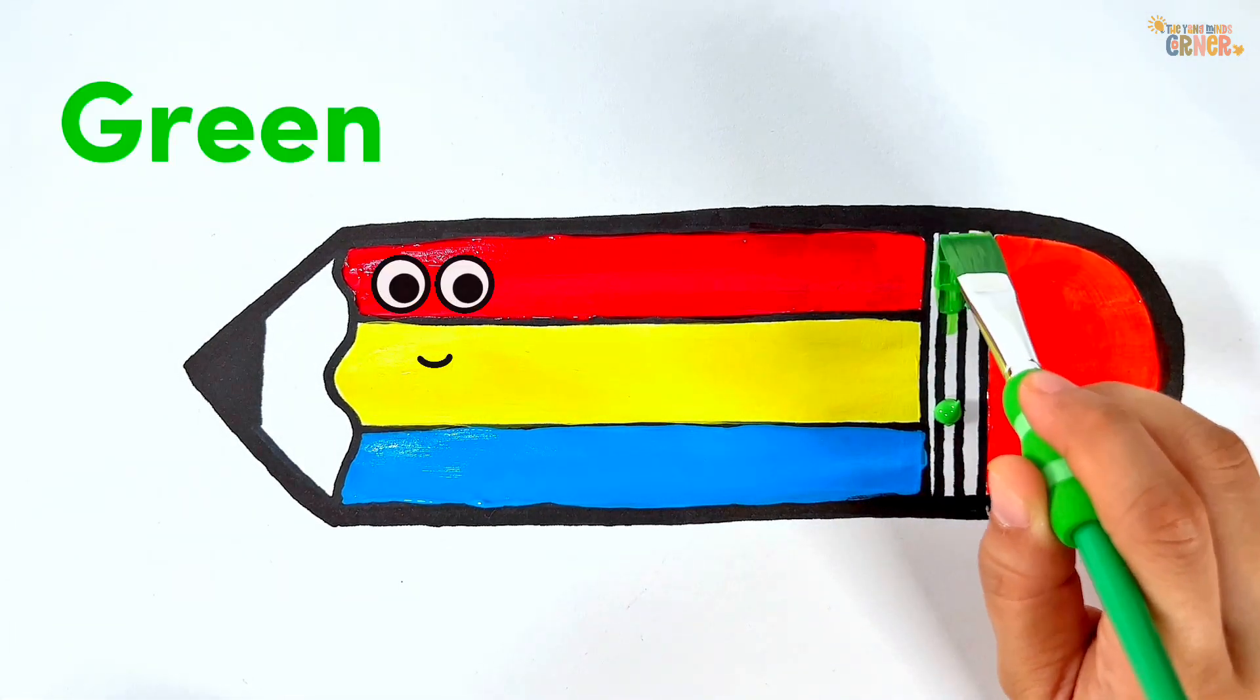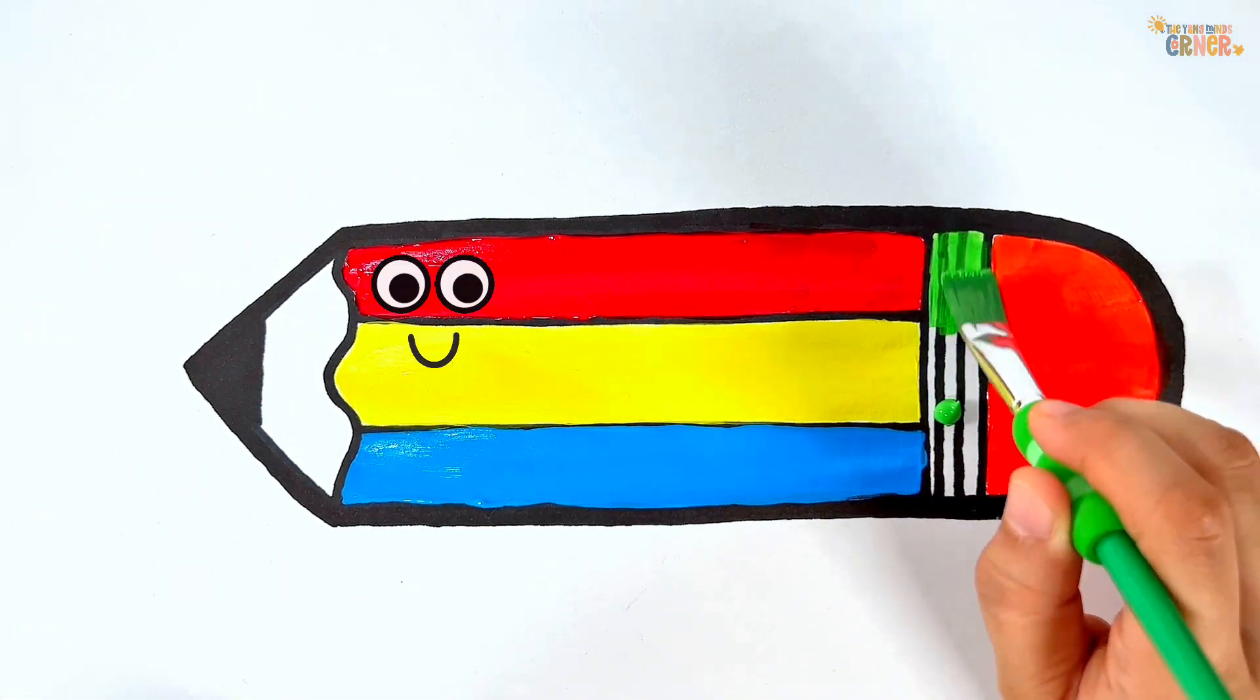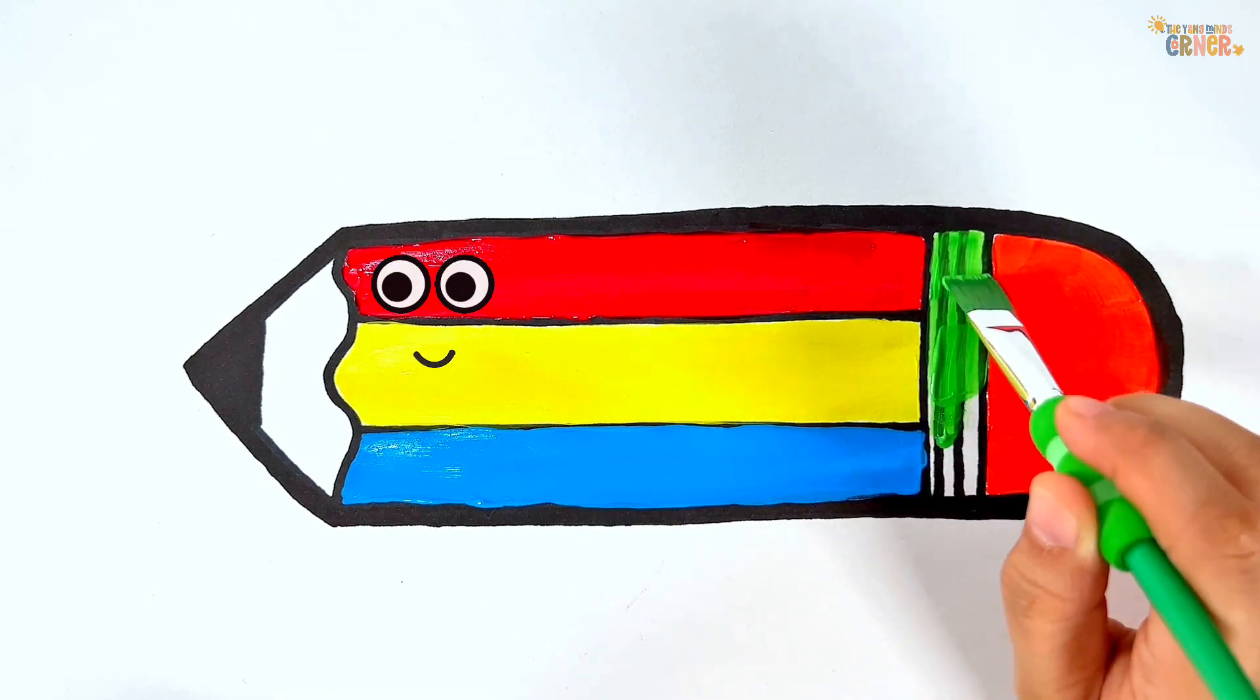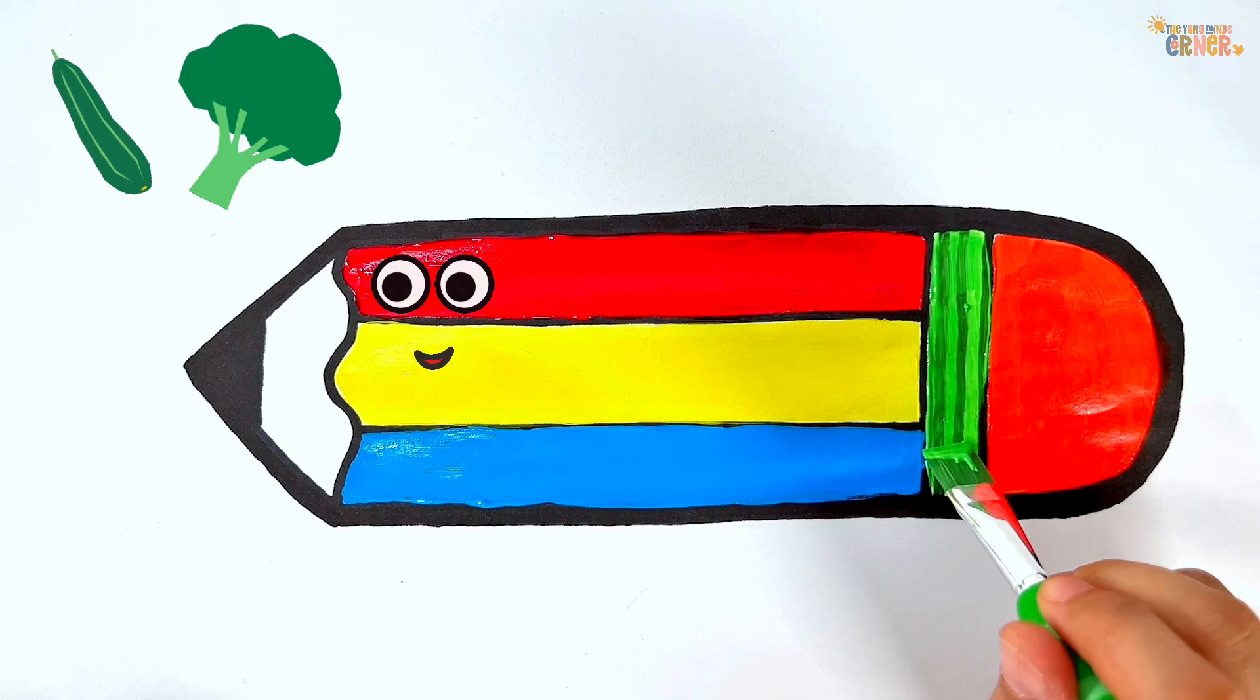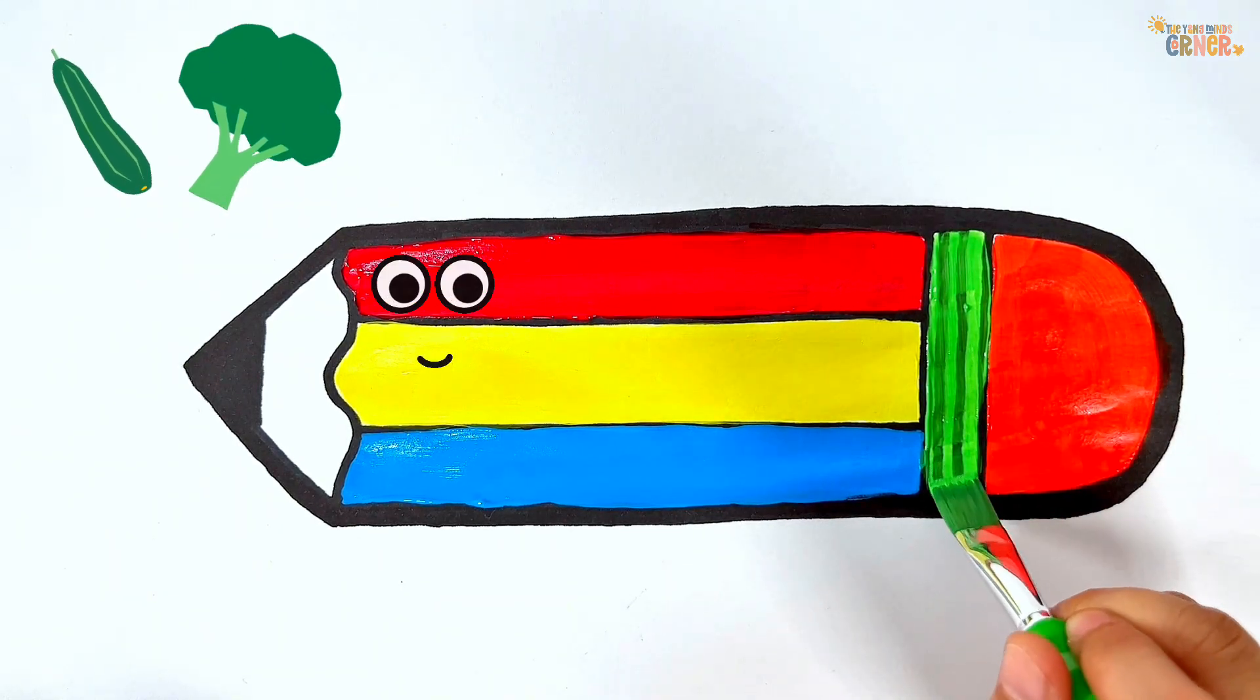Green. Green is the color of healthy vegetables like crunchy cucumbers and tasty broccoli, giving me energy to play and explore.